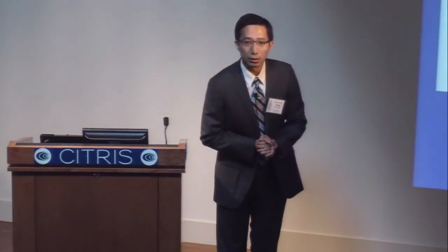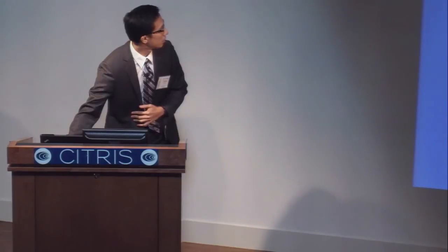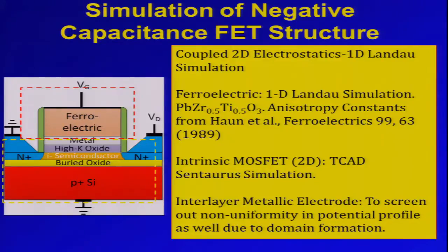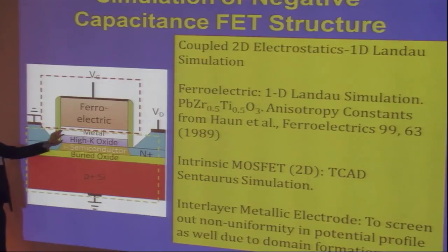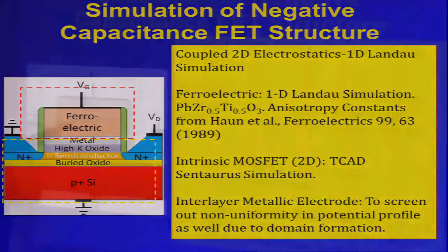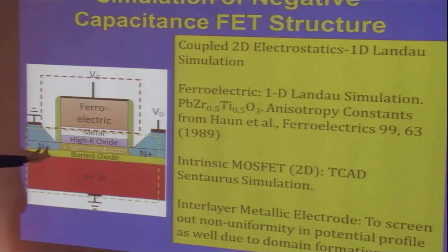Question: Why do you need a metal between the ferroelectric and the high-K? In our simulation, because there is a different potential from source to drain, we need to do a full 2D simulation to capture the effect. We try to put a metal at that interface so that the electric field or potential is uniform at that interface, allowing us to do a 1D simulation to represent the ferroelectric effect. For more rigorous simulation, a full 2D simulation should be done to capture the full effects of potential variation from source to drain.